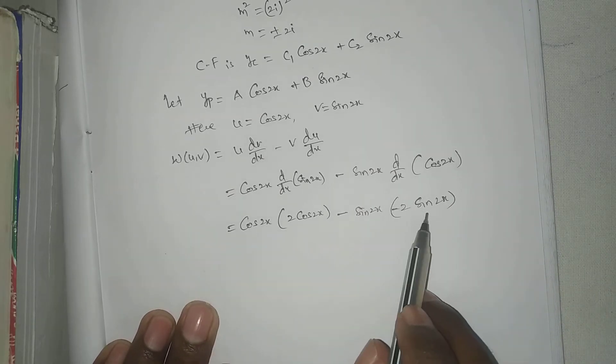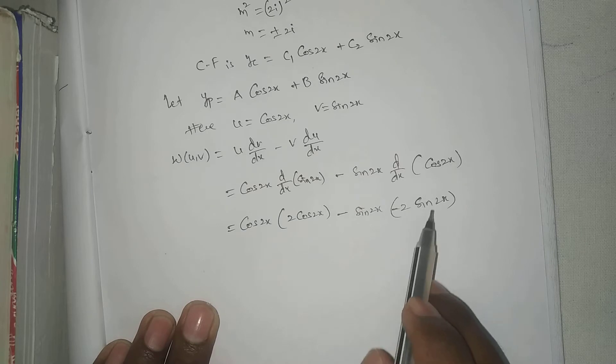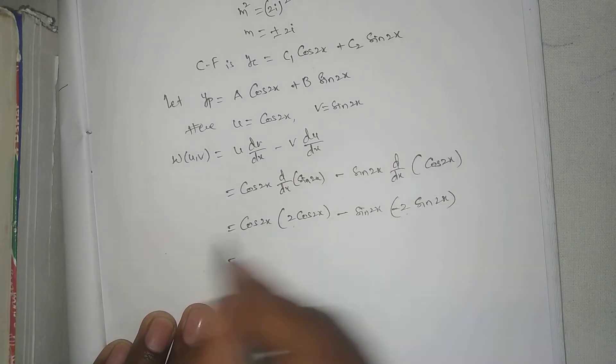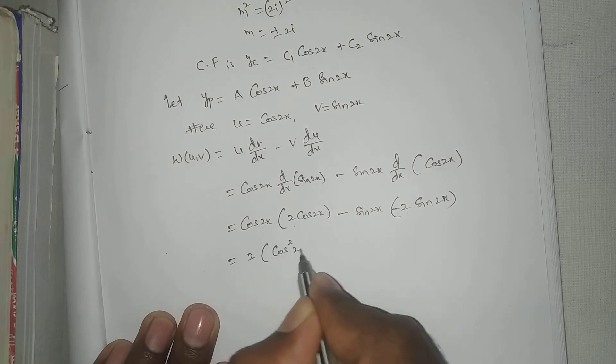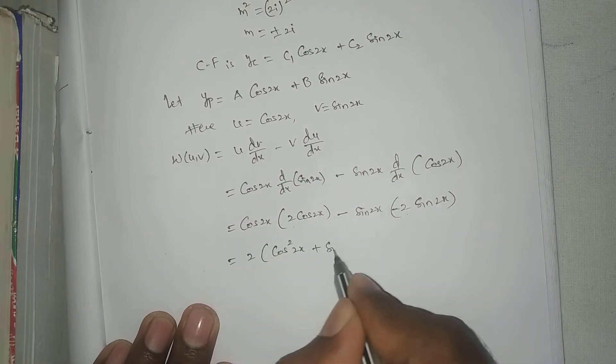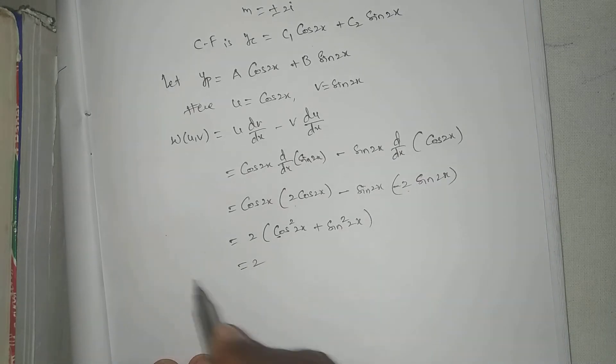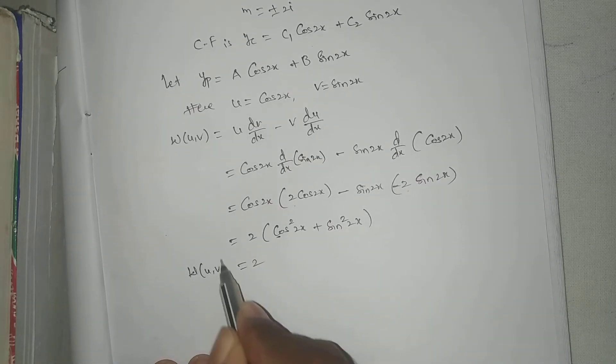Cos 2x derivative, d by dx into cos x equal to sin 2x. Two is common, cos square 2x minus into minus plus sin 2x. Cos square 2x plus sin square 2x equal to 1. Right, w of u comma v equal to 2.